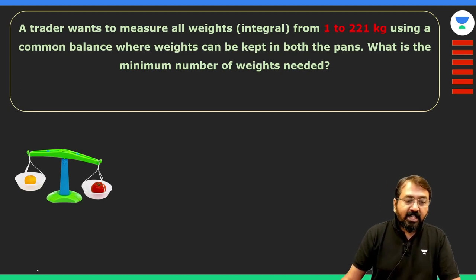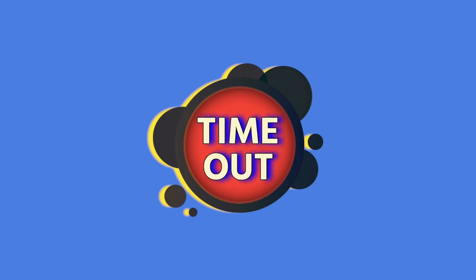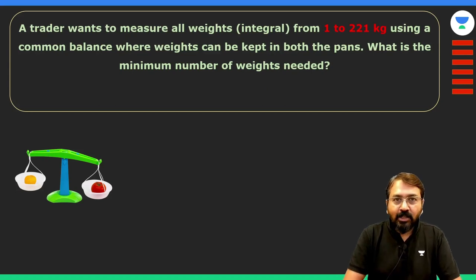Remember that we can put the weights on both sides of the pan, so this is going to be a slightly tricky situation. You can post your answer in the comment section. Now let's look at the solution.